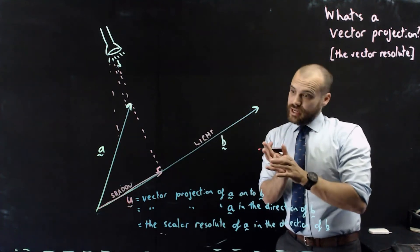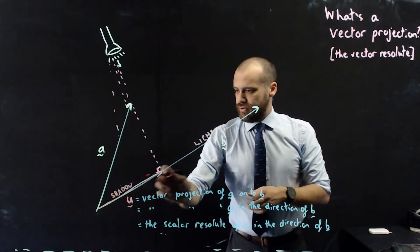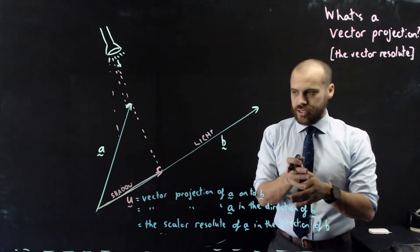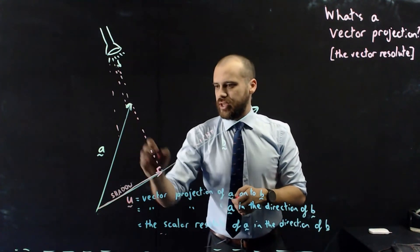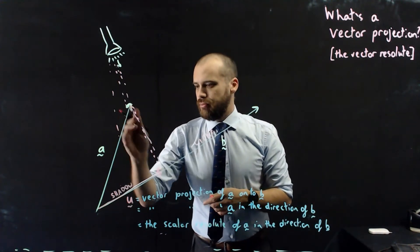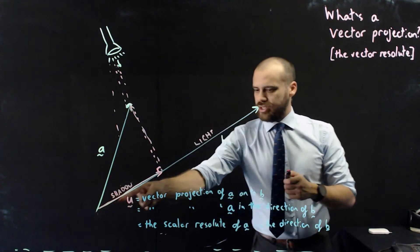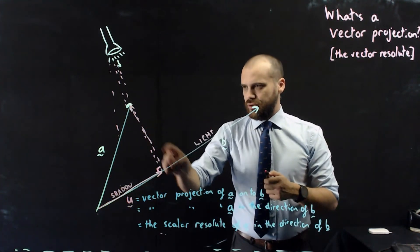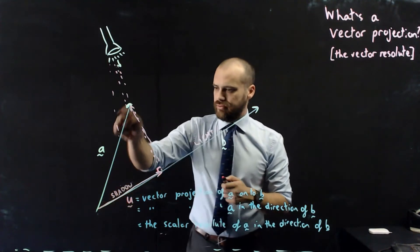So now, we can say that there is this vector here, U, which is the vector projection of A onto B, and then there's also this other vector here, which doesn't have a fancy name. But if we were to add the vector projection of A onto B and then this other vector on here, we would actually get vector A.